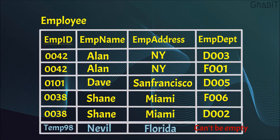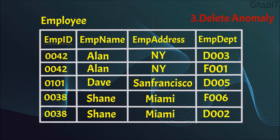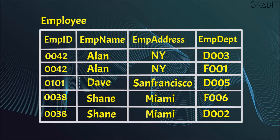Delete Anomaly: Suppose at some point a company closes department D005. If we delete the rows that have Employee Department as D005, then it also deletes the information of Employee Dev. To overcome these anomalies, we need to normalize the data.